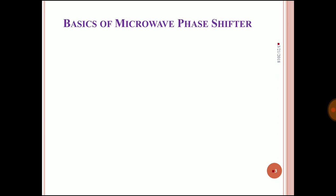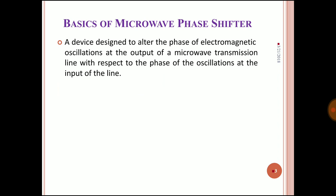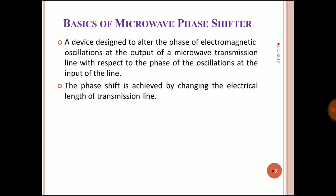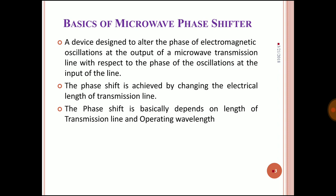Let us begin with the basics of microwave phase shifters. A phase shifter is a circuit which is utilized in electromagnetic oscillations to produce a phase deviation at the output side with respect to the input signal — it is a device which alters the phase of electromagnetic oscillations. The phase shift can be achieved by changing the electrical length of a transmission line, and it depends on the length of the transmission line and the operating wavelength.